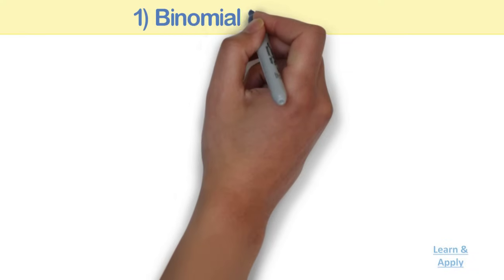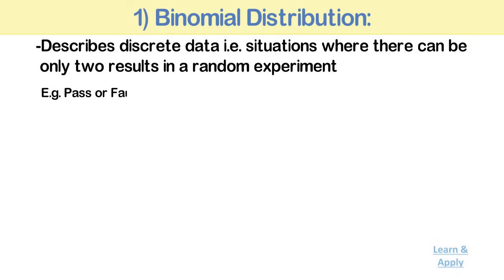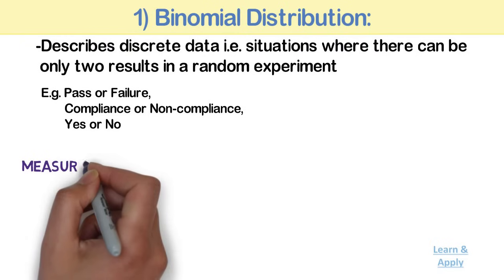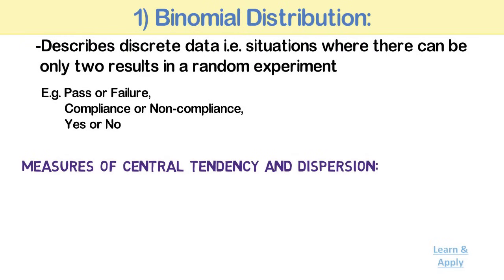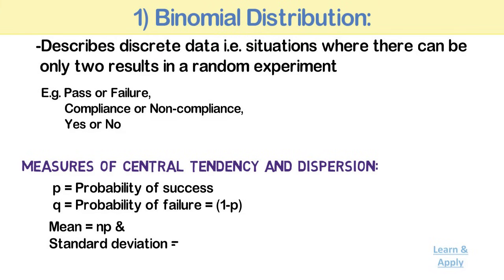Binomial Distribution: the binomial distribution describes discrete data — situations where there can be only two results in a random experiment. Examples are Pass or Failure, Compliance or Non-compliance, Yes or No. Measures of Central Tendency and Dispersion: for the binomial distribution, p is equal to probability of success, q is equal to probability of failure which equals 1 minus p, mean is equal to n times p, and standard deviation is equal to square root of npq. Here n is the total number of observations.